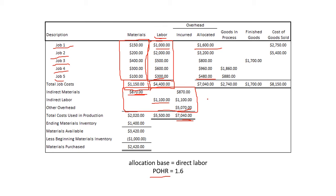It happens to be that our allocated overhead of $7,040 is equal to our incurred overhead. However, it's not always the case — for example, if our POHR were 1.7, the allocated amount would be different. How we balance them when they differ will be discussed in the next video, which covers adjusting factory overhead. For now, we're working with this simple case where allocated and incurred overhead are equal.